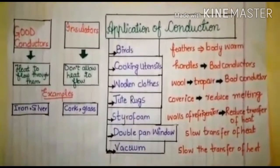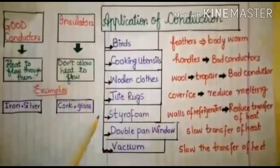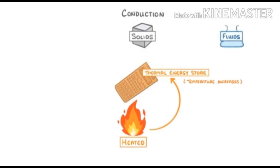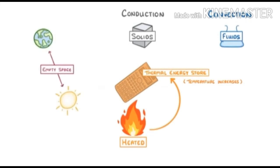To summarize: whenever an object is heated, energy is transferred to its thermal energy store and its temperature increases. Heating can take place in three different ways depending on the medium involved. For solids, heat is transferred by conduction; in fluids it's via convection; and to get through empty space, heat is transferred in the form of radiation.